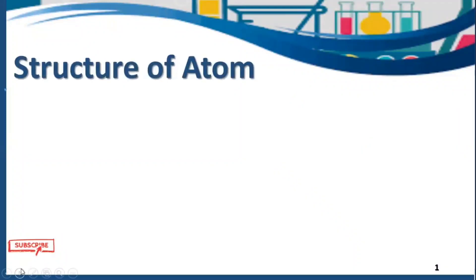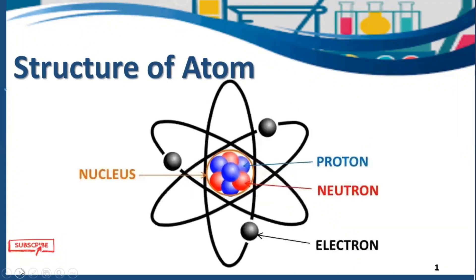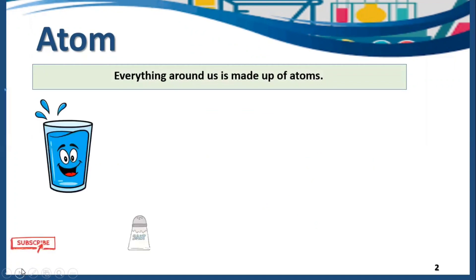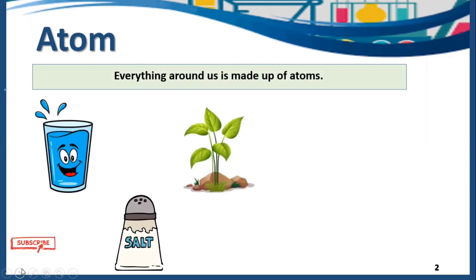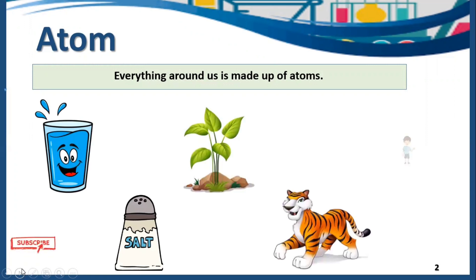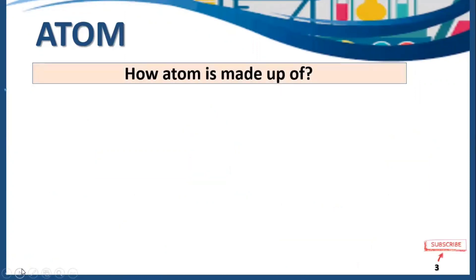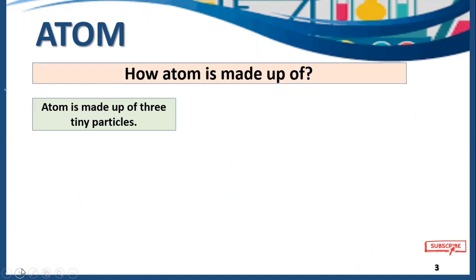In today's video we are going to learn about the structure of an atom. This is how an atom looks like. Everything around us is made up of atoms — for example, water, salt, plants, animals, and even humans. They all are made up of atoms. Now the question arises: how is an atom made up?